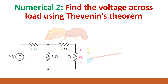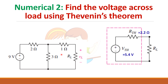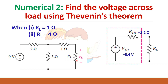Now take the same problem and find the voltage across the load using Thevenin's theorem. We have already found the equivalent circuit. When the load resistance is 1 ohm, what is the voltage across this load? And when the load resistance is changed to 4 ohms, what will be the voltage across the load? By doing this problem, you can understand the importance of Thevenin's theorem.